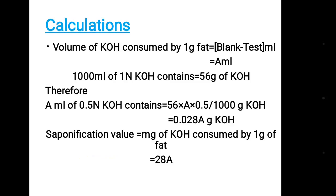Calculations: Volume of KOH consumed by 1 gram of fat equals blank minus test reading (= A ml). Since 1000 ml of 1 normal KOH contains 56 grams of KOH, A ml of 0.5 normal KOH contains 56 × A × 0.5 ÷ 1000 grams of KOH, which equals 0.028A grams of KOH. Therefore saponification value equals milligrams of KOH consumed by 1 gram of fat = 28A.